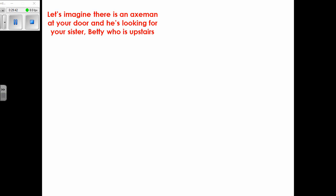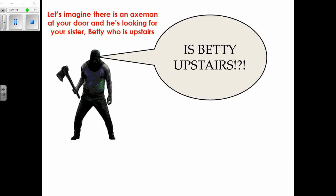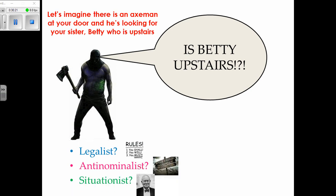Let's revisit Kant's axe-man example — an axe man is at your door looking for your sister. According to Kant you cannot lie because it takes away his reason and freedom. According to natural law, probably you cannot lie either. The legalist would have to say where the friend was. The situationist, however, would lie — even though the Bible says do not lie — because obviously the right thing to do is break the rules to show the most love.